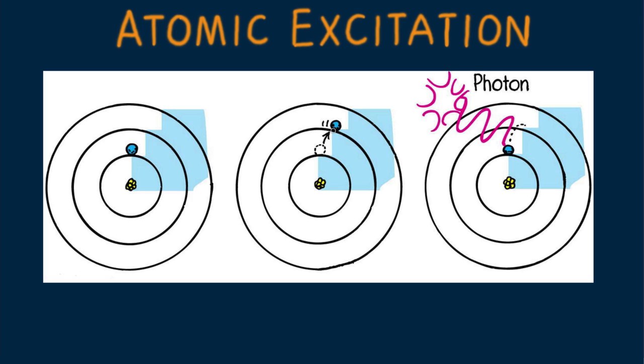De-excitation occurs when the electron drops to a lower level and emits a photon. The energy of the photon? Exactly the energy difference between the energy levels.